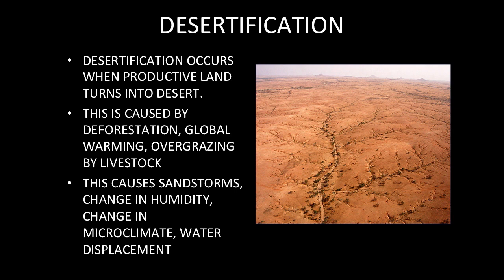Overgrazing by livestock is another cause. Cows are said to have a negative effect and to be a reason for desertification, though more evidence is coming out suggesting that might not necessarily be the truth. Desertification also causes sandstorms, which are very detrimental to people living in desert areas. It can also cause changes in microclimate and water displacement.